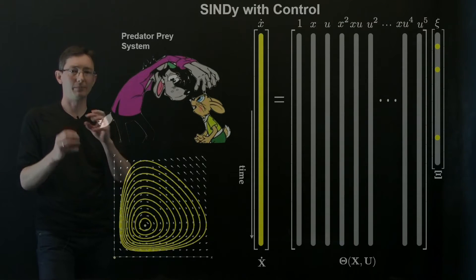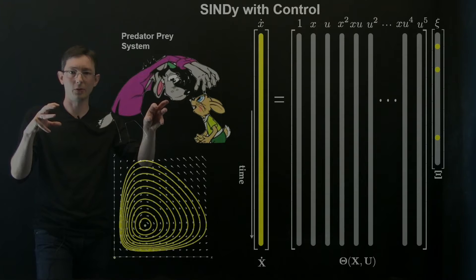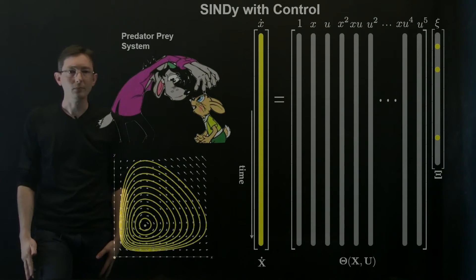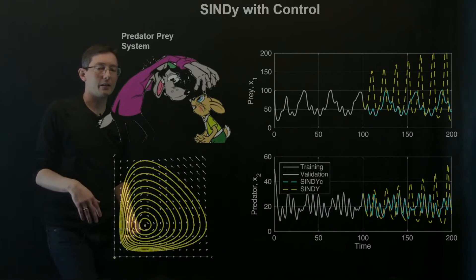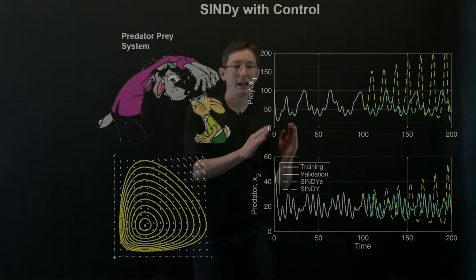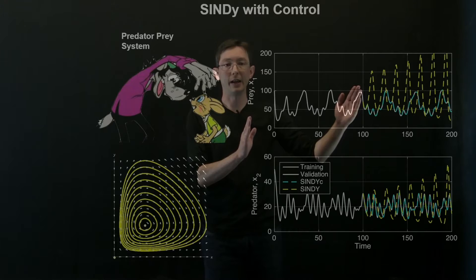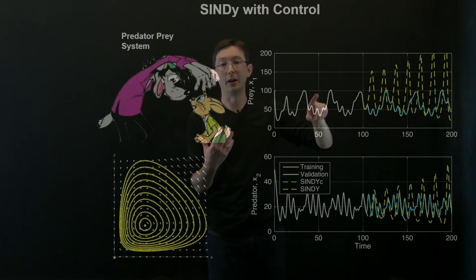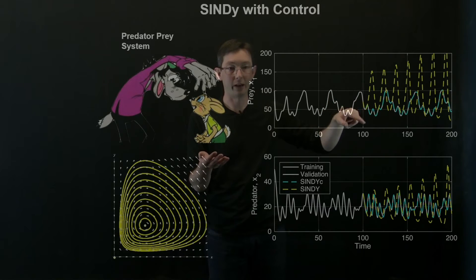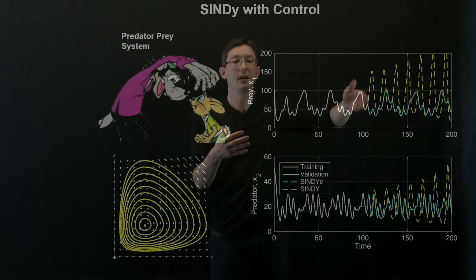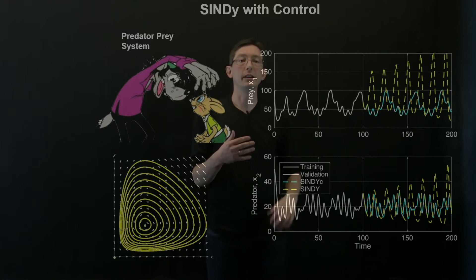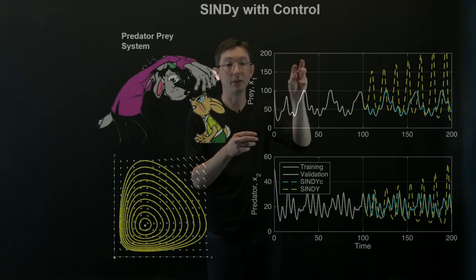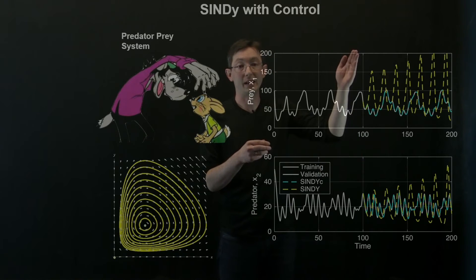In this case I just write down the equations with some control input, I simulate them to generate my data, and the idea here is from time zero to a hundred I have one control strategy, maybe here I'm aggressively trapping wolves, so that's one control strategy, and then at time step 100 my control strategy changes, so my u, that input vector u, changes at time step 100.